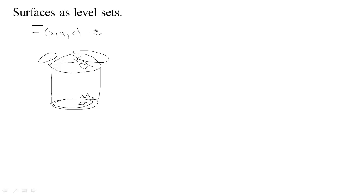What's the relationship? If we look at it end on, we have this little patch of surface and then it's casting a shadow, which is a little rectangle. So we have the surface here, delta sigma, and the shadow is a little bit of area, delta A.